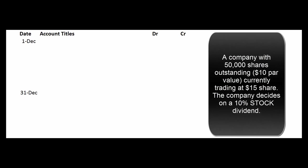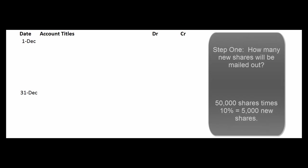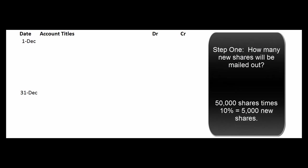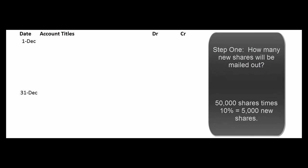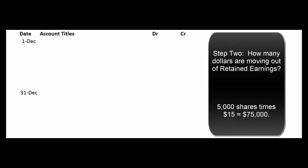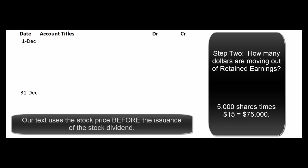Let's say a company has 50,000 shares of stock outstanding at $10 par, currently trading at $15 a share, and they declare a 10% stock dividend. The first thing to figure out is how many shares we're going to issue: 10% of 50,000 is 5,000 shares. Then we figure out how many dollars to move out of retained earnings: at $15 per share market value times 5,000 shares, that's $75,000 moving out of retained earnings and into paid-in capital.